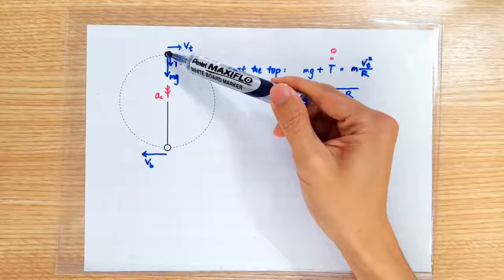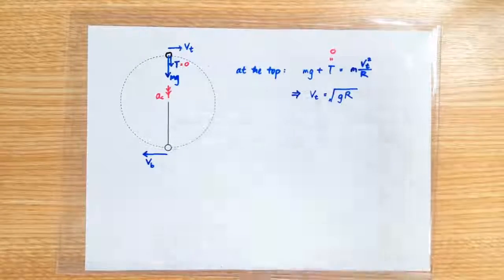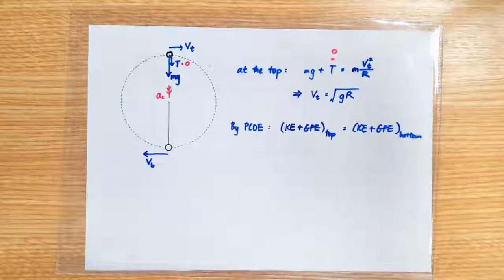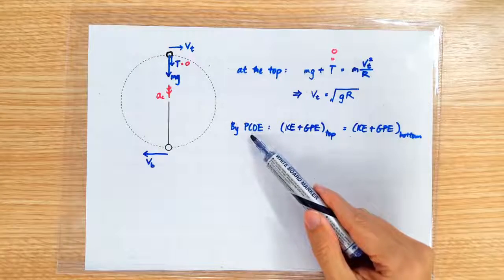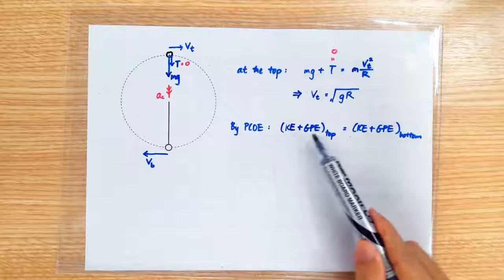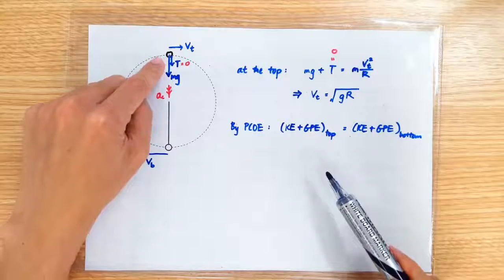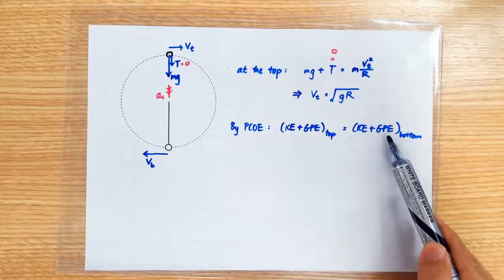So applying the principle of conservation of energy, the KE and GP of the stone at the top must be equal to the KE and GP of the stone at the bottom.